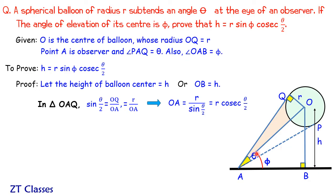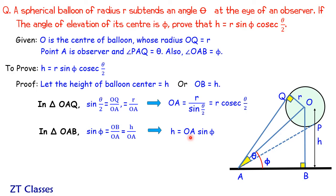Now in the second triangle OAB, the value of phi is given and we need to find H. We take the sine ratio: sine phi equals OB over OA, which is H over OA. So H equals OA times sine phi. Substituting the value of OA from before, H equals r times sine phi times cosecant theta by 2, which is exactly what we had to prove. Hence proved.